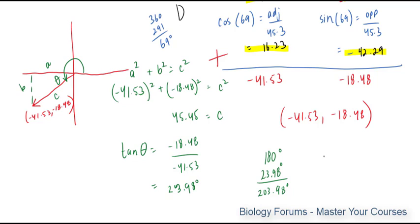So our final answer, we're going to call this vector v, is equal to 45.45. I like to write the magnitude first. And then the final angle of 203.98 degrees. There you have it, folks. That is how you find the resultant vector of three or more vectors.